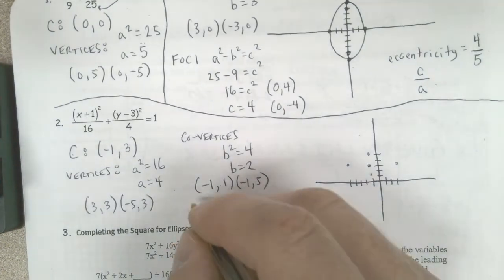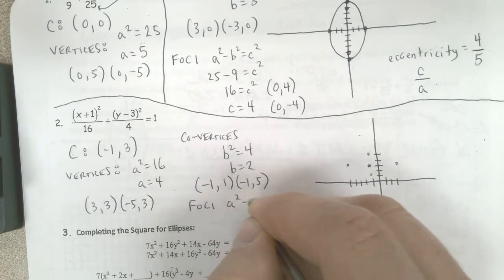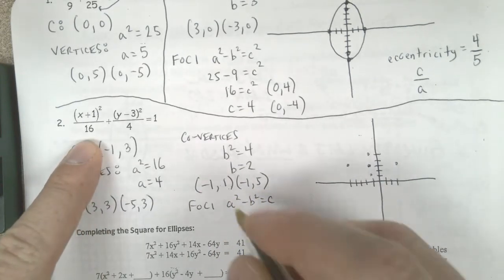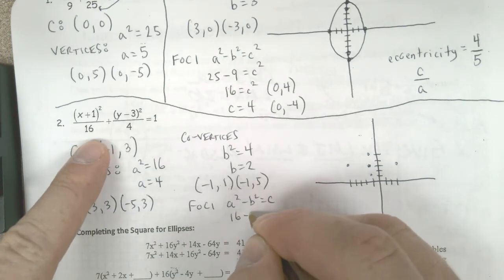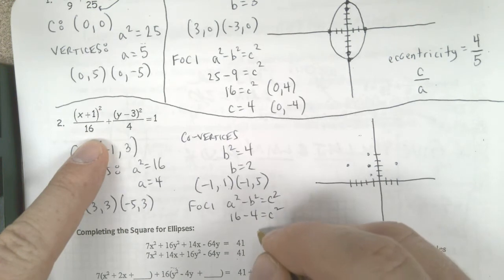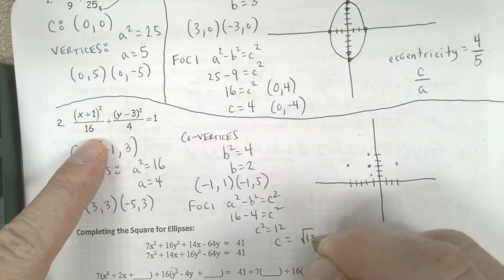We're then going to go ahead and find the foci. The foci, we know a squared minus b squared equals c squared. In this case, a squared is 16, b squared is 4. So c squared is going to be equal to 12, which makes c the square root of 12.